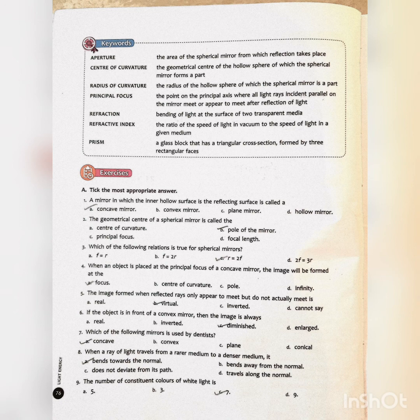Fifth one: The image formed when reflected rays only appear to meet but do not actually meet is... Answer is B, virtual. Sixth one: If the object is in front of a convex mirror, then the image is always... Answer is C, diminished.